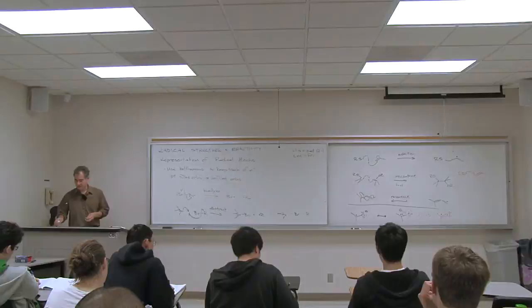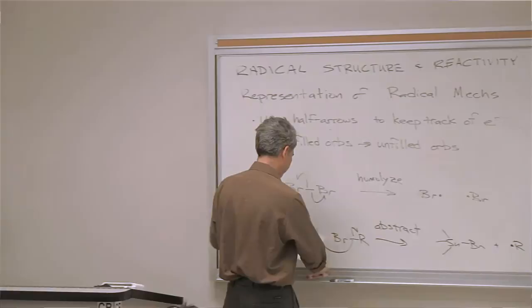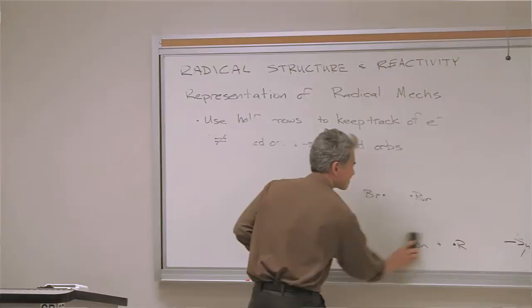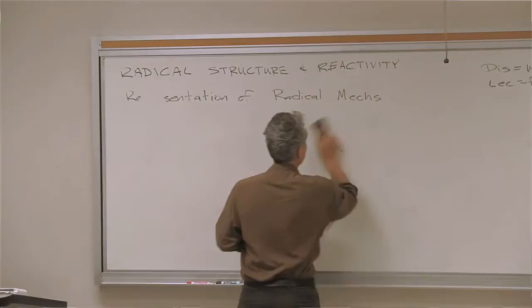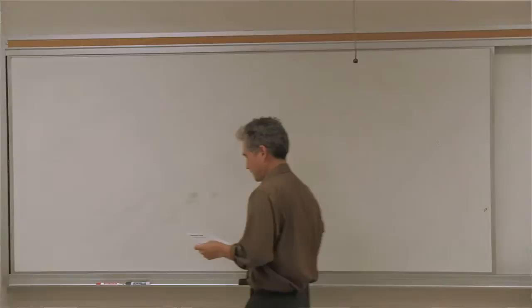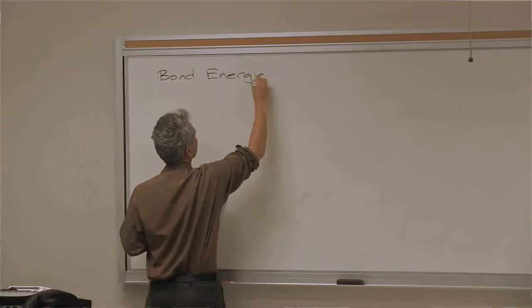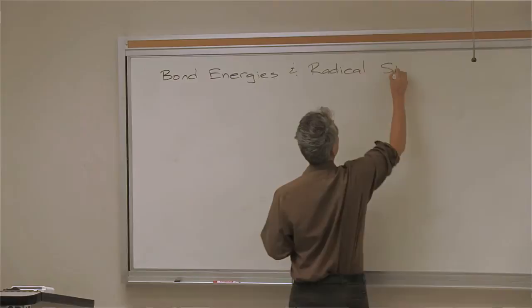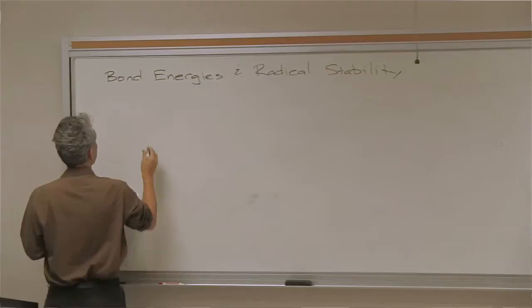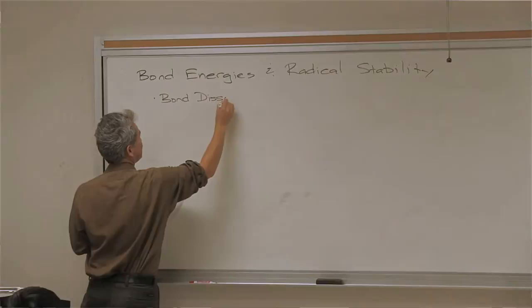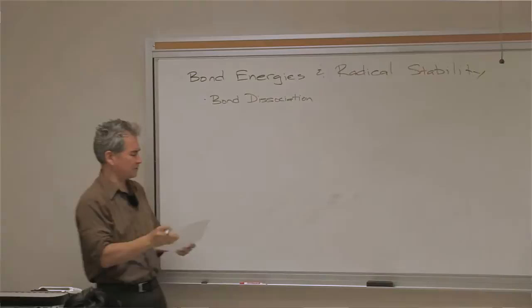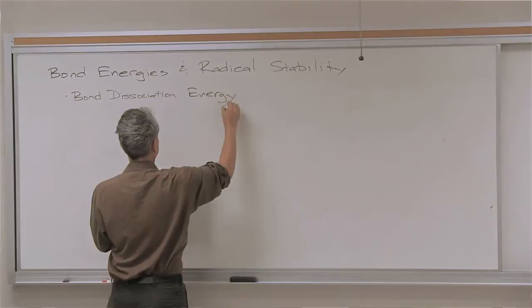Those are the types of elementary reactions we're going to be doing in this section of the course. Now I want to start off by talking about bond dissociation energies. We used to cover this in the first part of this two-quarter sequence, Chem 201. I don't know if we still cover it in that section, but I'll say a little bit about it.